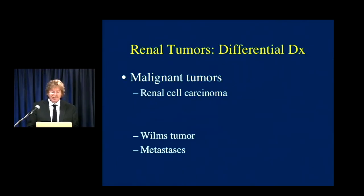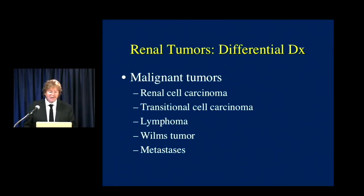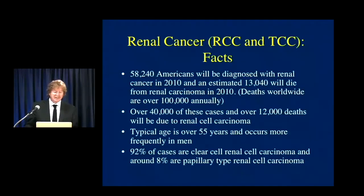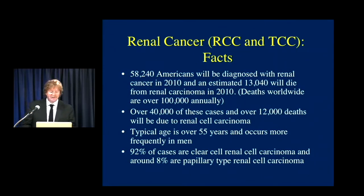When we speak about malignancies, we talk about a number of different tumors, and the one I'm going to focus on today is renal cell carcinoma and transitional cell carcinoma. Some key numbers: 58,000-plus Americans will be diagnosed with renal cancer this year, an estimated 13,000-plus patients will die, and worldwide deaths are over 100,000. Over 40,000 of these cases and 12,000 deaths will be due to renal cell carcinoma.